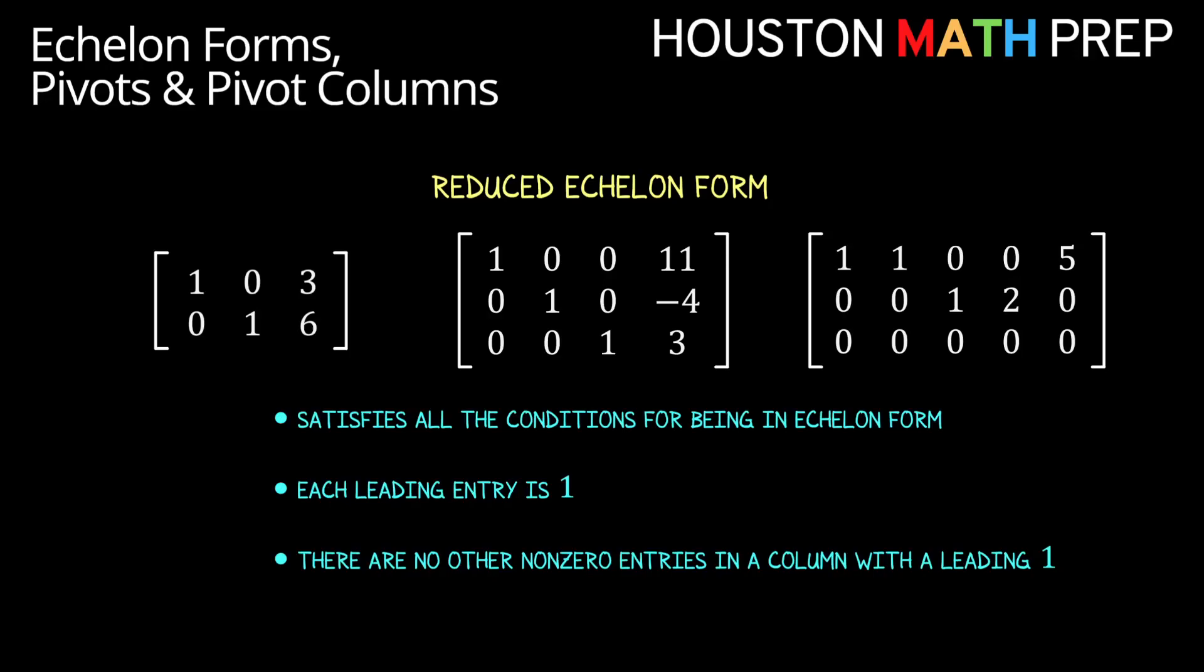Another more particular type of echelon form is the reduced echelon form. For this one it needs to be in the regular echelon form, meaning we have all those lower stair requirements from the previous already met. But there are two additional things we need for this one. Any leading entry in a matrix needs to have a value of one. You can see that each of these leading entries in any row is one. And now also we need all entries above and below a leading entry to have a value of zero.